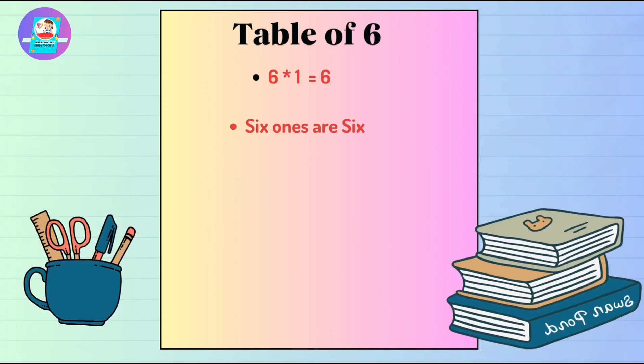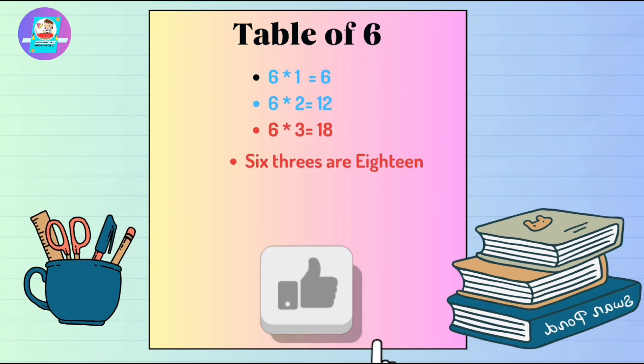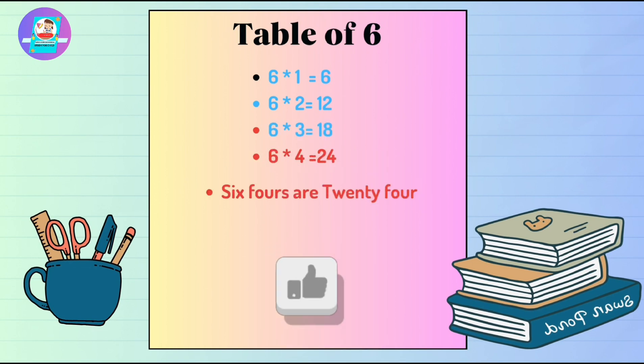Now we will learn table of 6. 6 1's are 6. 6 2's are 12. 6 3's are 18. 6 4's are 24. 6 5's are 30.